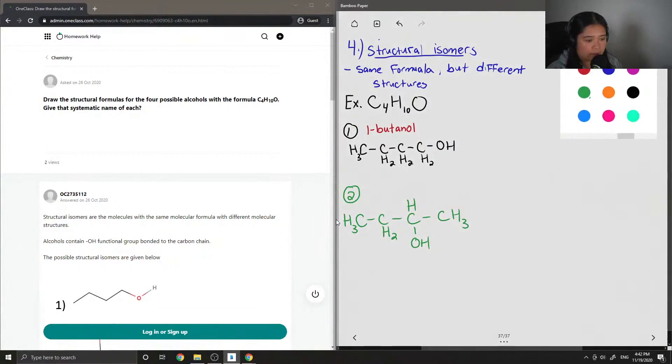Again, I count 10 hydrogens, four carbons, one oxygen. The name for this isomer would be 2-butanol.